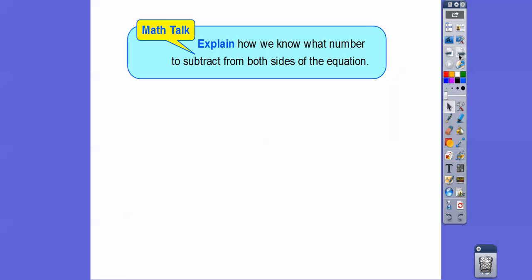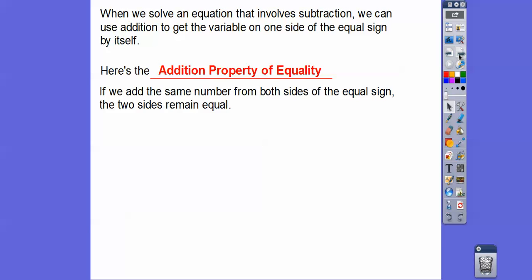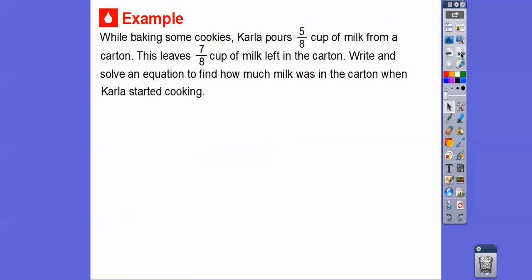Explain how we know what number to subtract from both sides of the equation. We subtract the number that's being added to the variable. When we solve an equation that involves subtraction, we use addition - that's the inverse operation to get the variable on one side by itself. Here's an example of the addition property of equality: we add the same numbers to both sides of the equal sign, and if we do that it remains equal. For example, we have 7 - 4 = 3. If we add 4 to both sides, the minus 4 and plus 4 cancel each other out and we get 7 = 7.